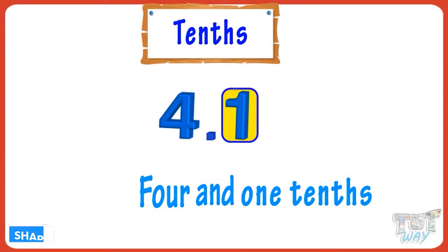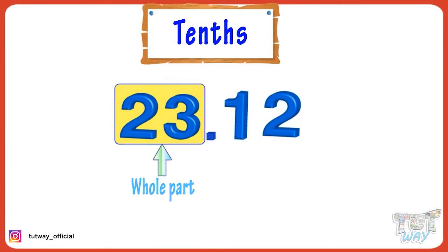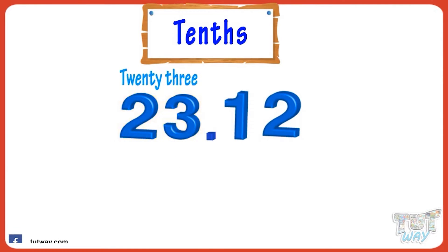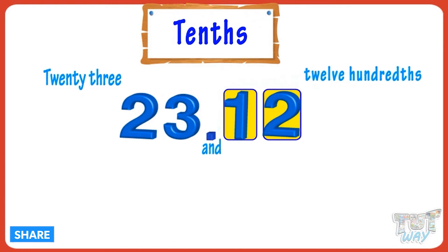'And' is for the decimal. Now let's take another example. Here we have two digits — we have to name this decimal number. The number before the decimal is the whole part; it is named as it is. The decimal is named as 'and,' so the name became '23 and.' Now we have two digits after the decimal, so we will name it as hundredths. Our name became 23 and twelve hundredths.